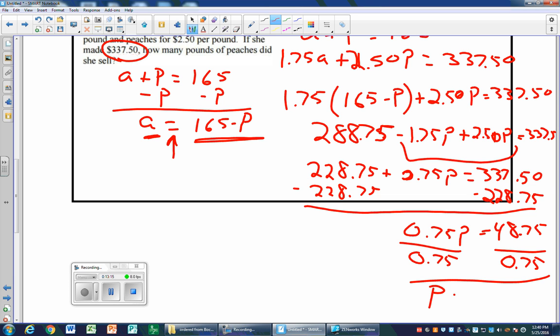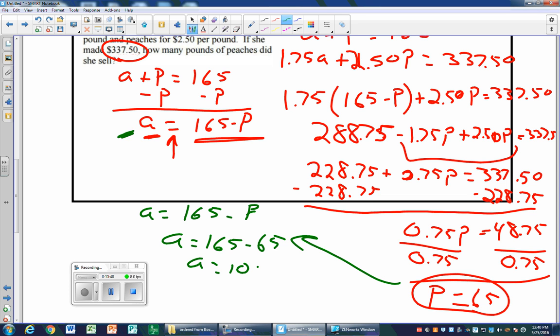And you think you're done, but that's just the peaches. Apples equals 165 minus p. The p was 65, so apples is 165 minus 65, or 100 pounds. That's it for this review worksheet. If you have any questions, make sure you ask me in class. Have a great day.